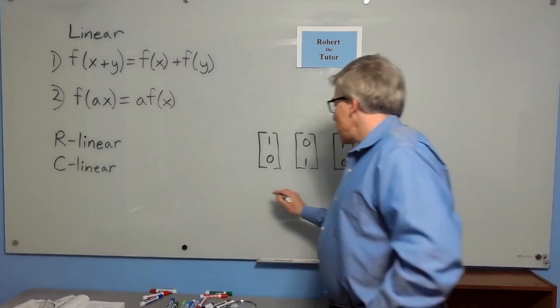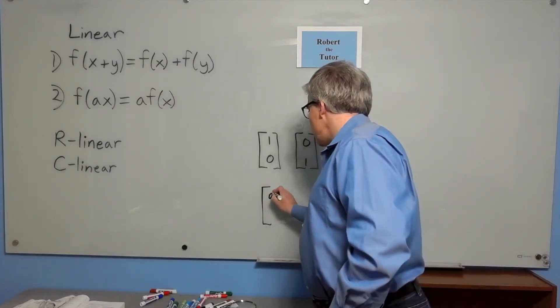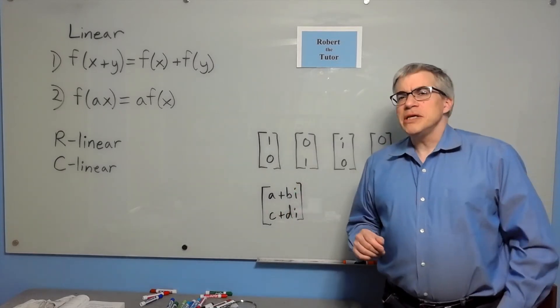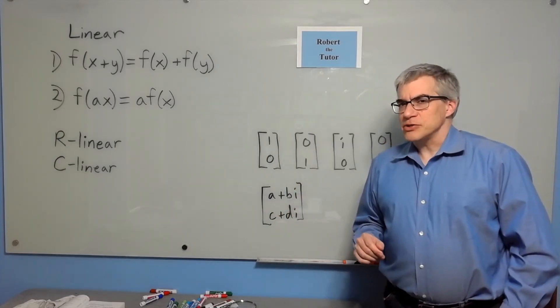For example, if you talk about generic vectors in two dimensions, that could be A plus Bi, C plus Di, and we want to say, how many dimensions is that as a vector space?